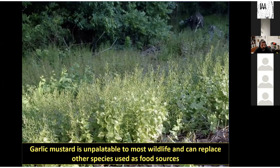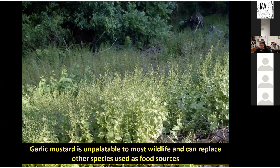Another example is garlic mustard. It's really unpalatable, so not a lot of our wildlife eat it. As it moves in and starts replacing our native understory, you start drastically changing the habitat quality and forage quality for wildlife in that forest. It goes from an area that may sustain quite a number of animal species to one that's largely lost the popular food sources for animals that feed in the understory, really drastically changing how animals can use the natural landscape.